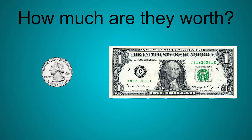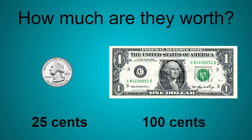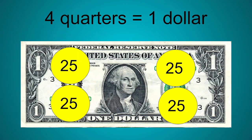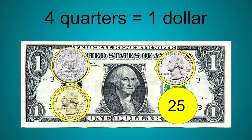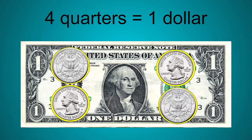A quarter is worth 25 cents and a dollar is worth 100 cents. Four quarters equal one dollar. Each quarter is 25 cents: 25, 50, 75, 100. Four quarters equals 100 cents, or a dollar.